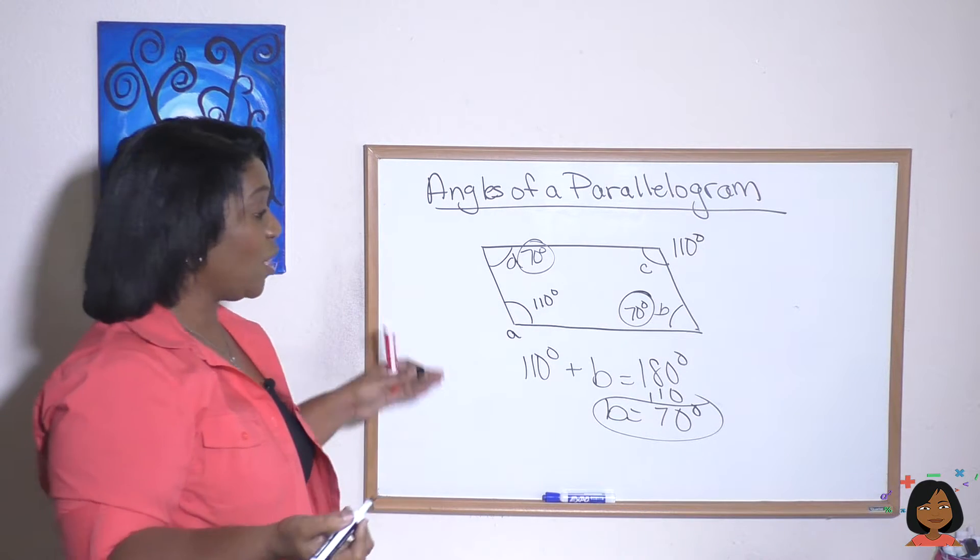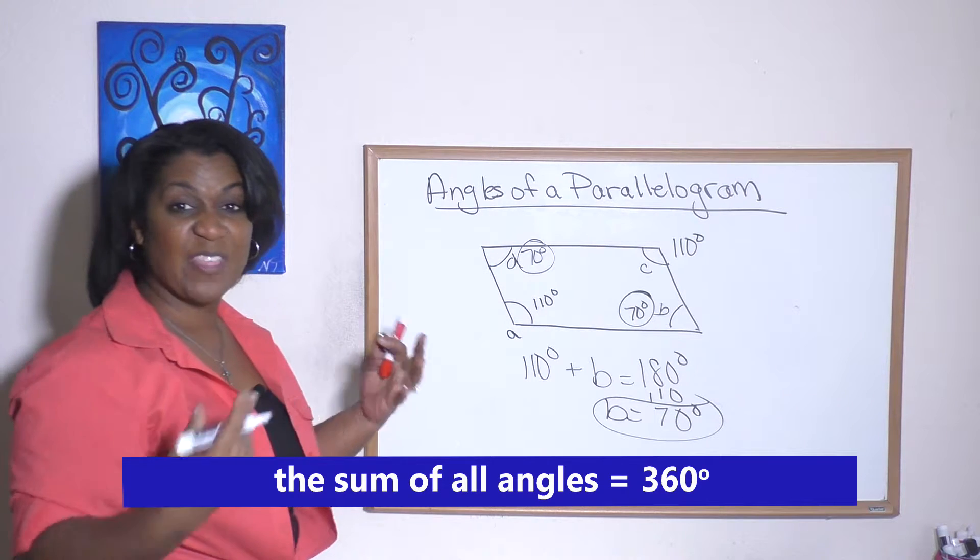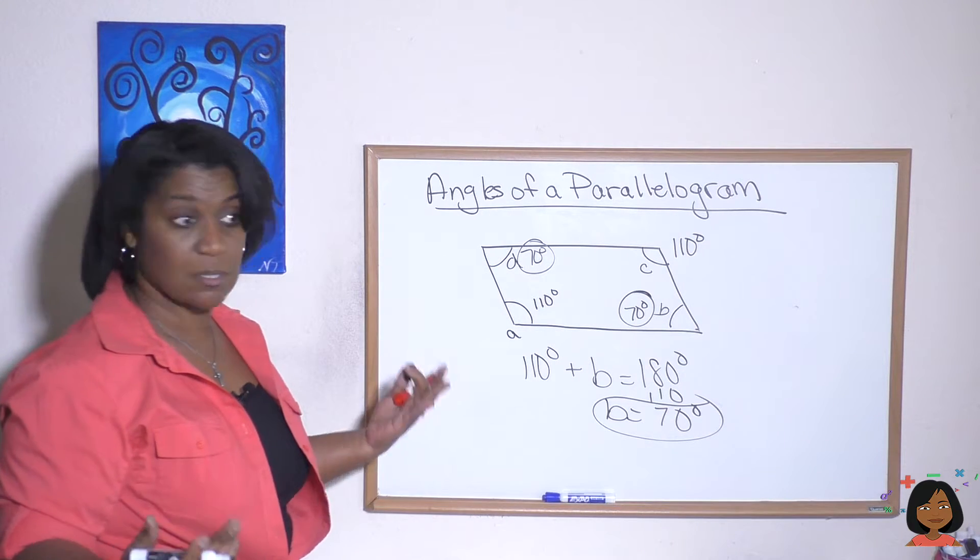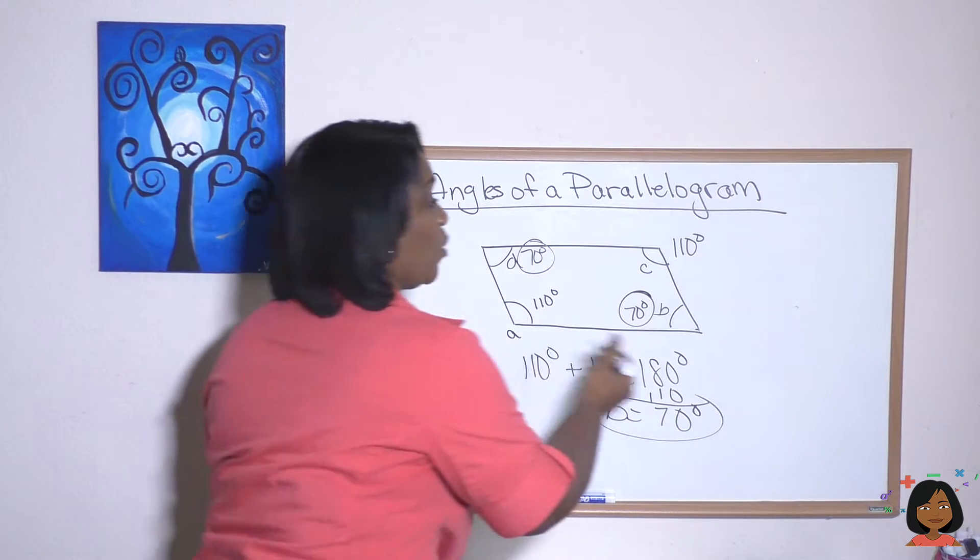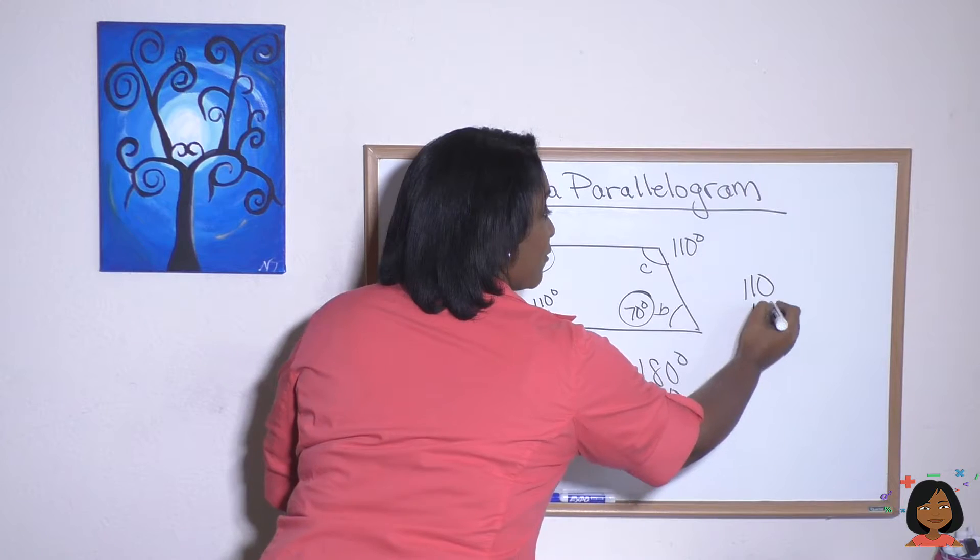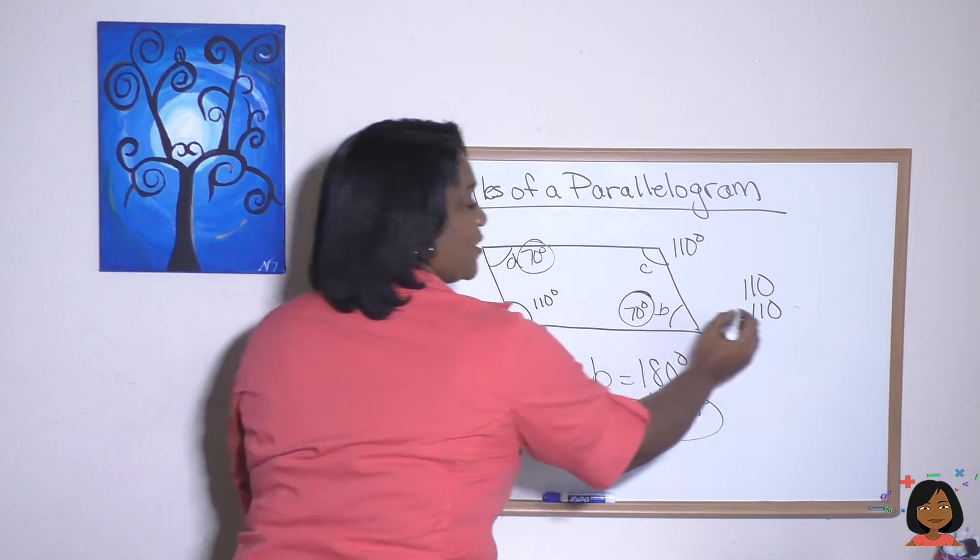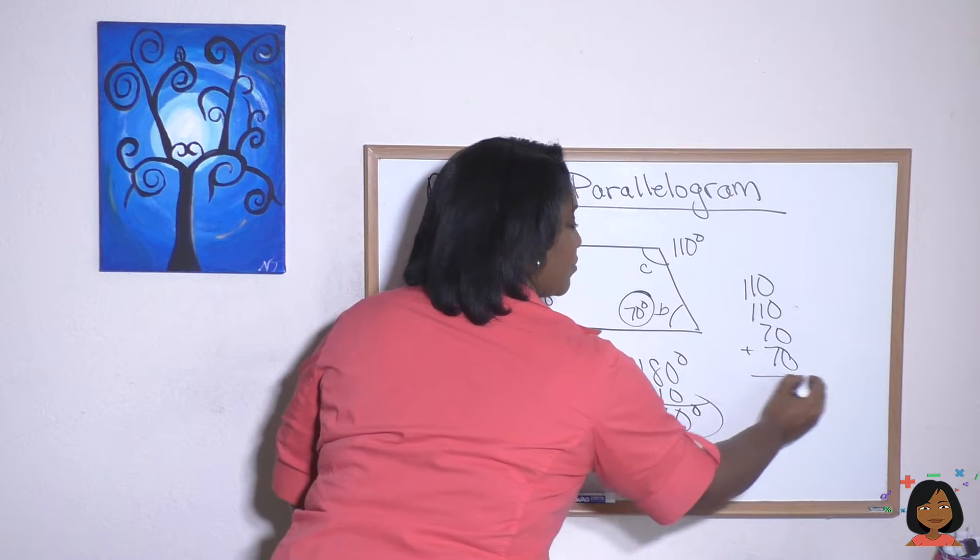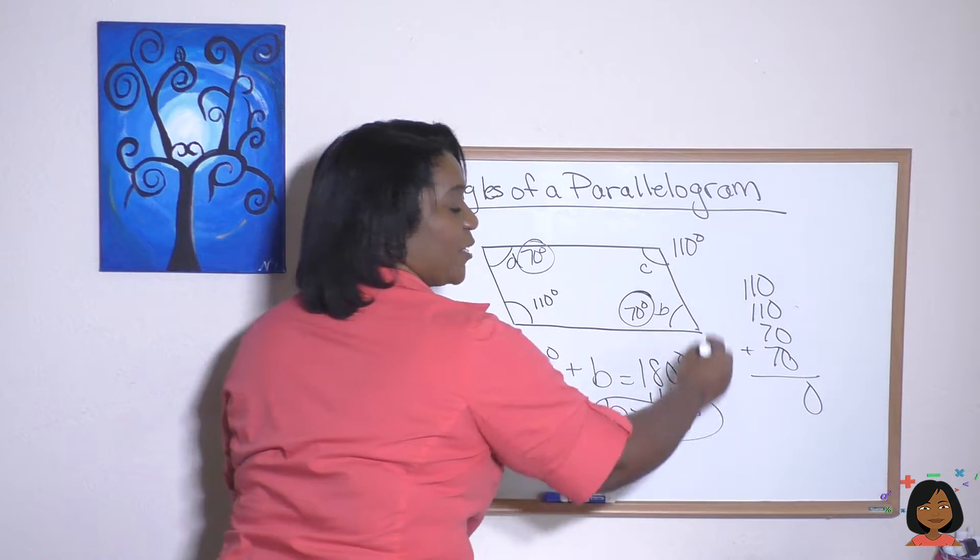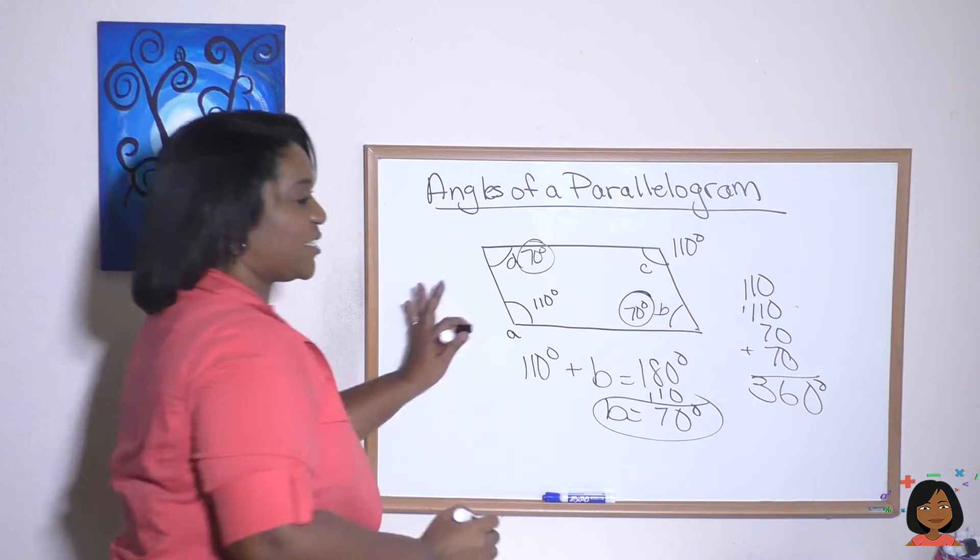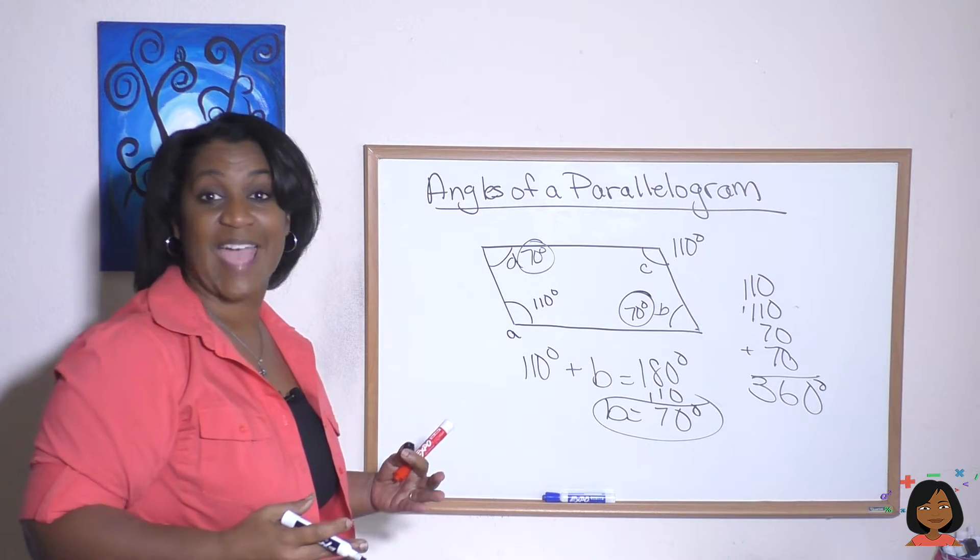And here's the good news. All of our angles, when we add them up together, are going to equal 360 degrees. Let's test it out. We have 110 for A. We have 110 for C. And then we have 70 and 70 for B and D. 7 and 7 is 14, and 2 is 16. And there we go. 360 degrees are what all of the angles add up to.